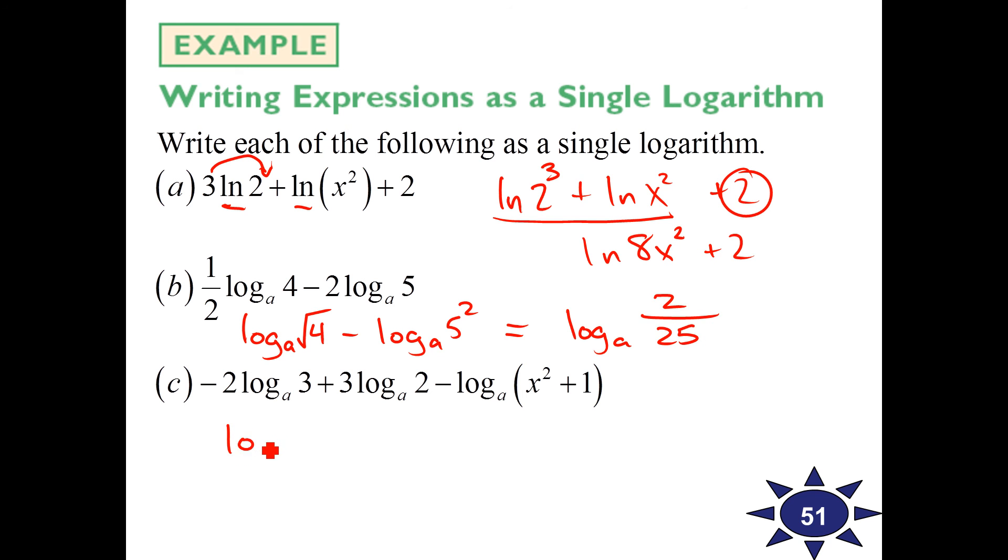Last one. Let's put it all together here. Log base a of 3 to the negative 2 is 1 ninth, 1 over 3 squared. Plus log base a 2 cubed is 8 minus log base a of x squared plus 1. This will become log base a of 8 ninths all over x squared plus 1. Which is log base a of 8 over 9 parentheses x squared plus 1. A lot going on there. Walk through those steps. Try problem 51.